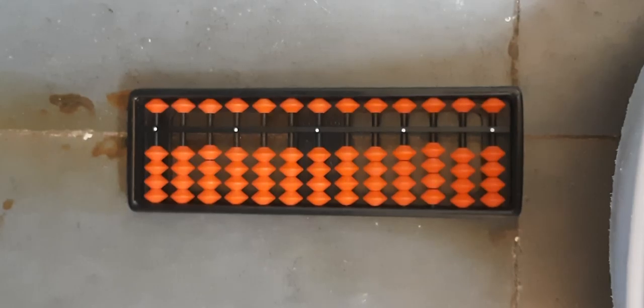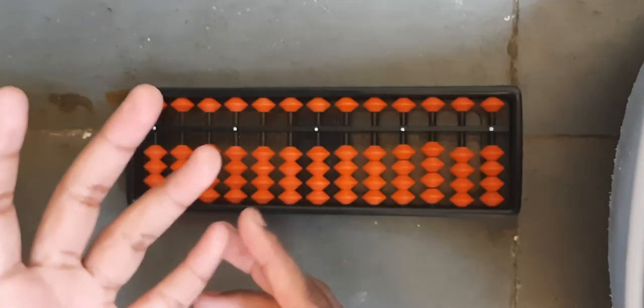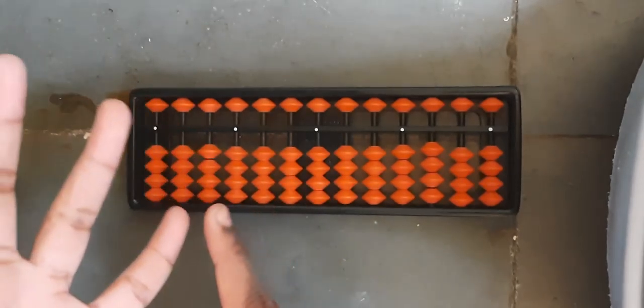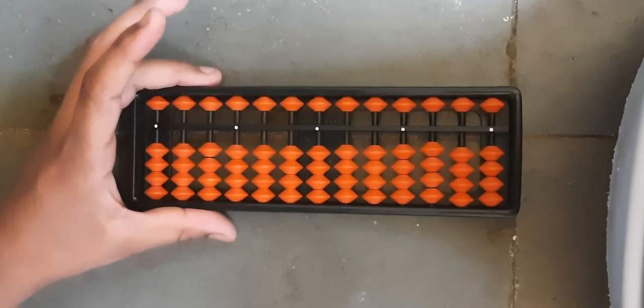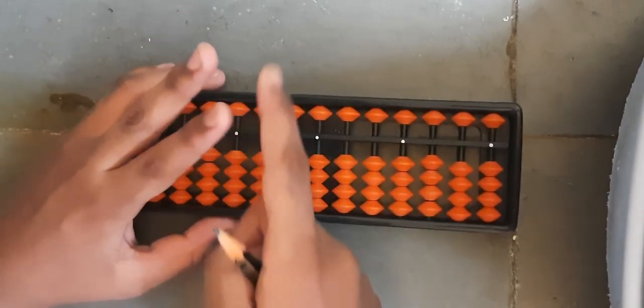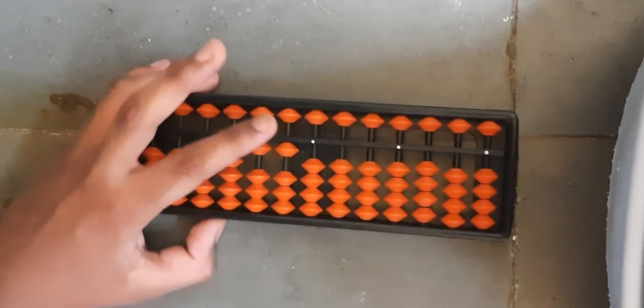How to hold an Abacus? To hold an Abacus, we should use two hands. Ring finger, little finger and thumb finger is used to hold the Abacus tightly. The index finger and the middle finger are called butterfly fingers and are used to navigate beads.